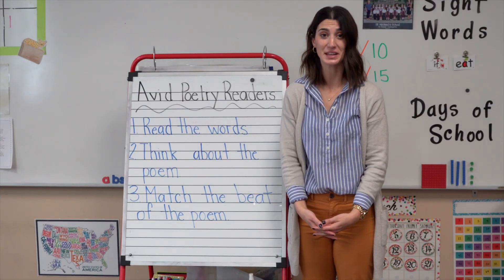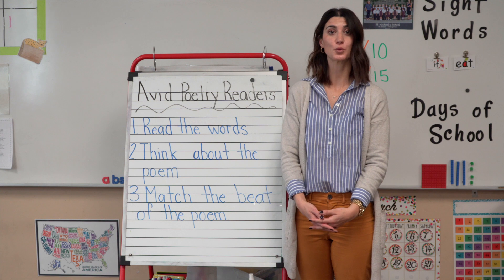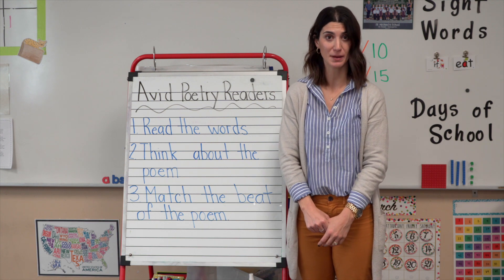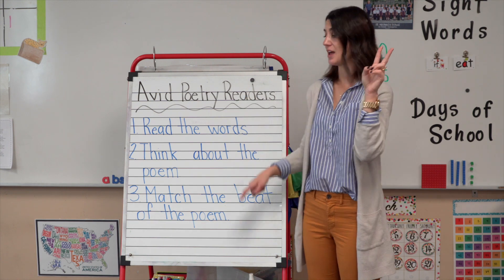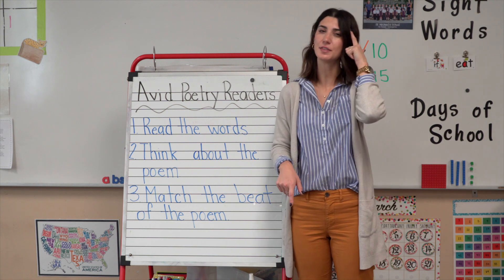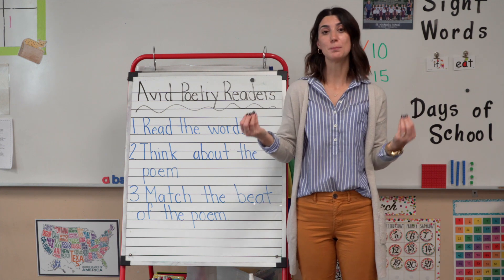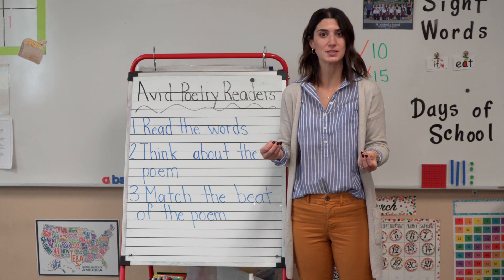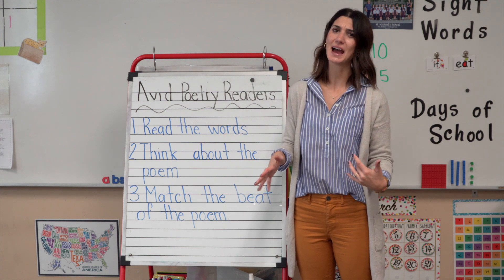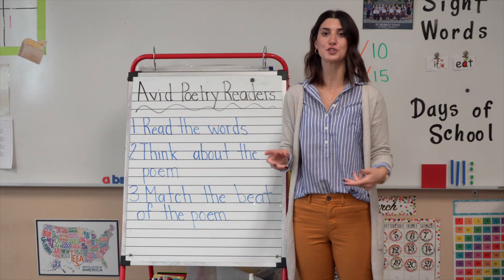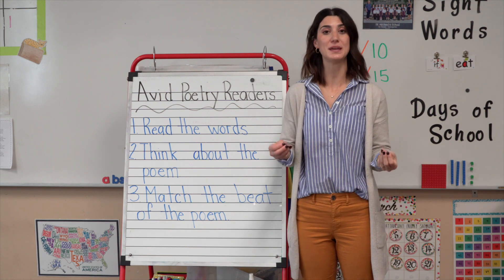You guys sounded great reading that poem. We're going to look at another poem that you might not have seen before, so I'm going to give you some tips for reading it. The first thing avid poetry readers do is they read the words. The second thing is they think about the poem — what's going on in it. And then that helps them, number three, match the beat of the poem and their tone of voice. If something happy is going on, your tone of voice is going to be happier. If something sad is happening, you might talk a little slower.